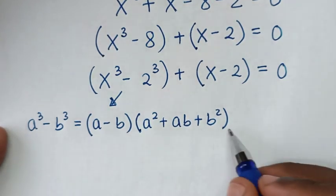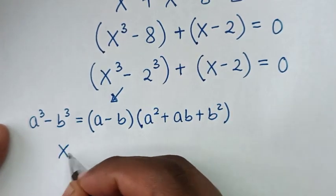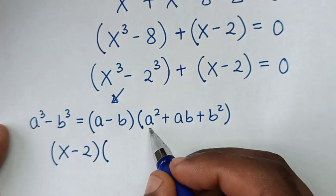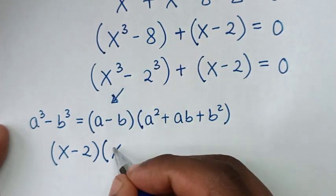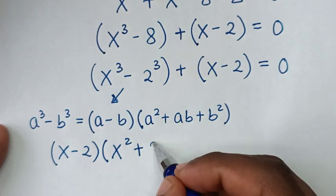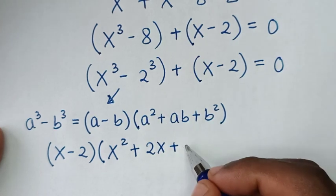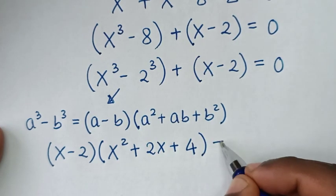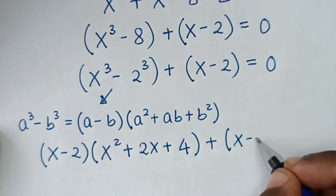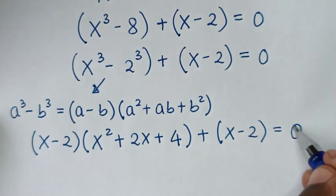We apply this form: a minus b becomes x minus 2. Then a squared is x squared, plus ab is 2x, plus b squared is 2 squared which is 4. So we have x minus 2, times x squared plus 2x plus 4, then plus the bracket x minus 2, equal to 0.